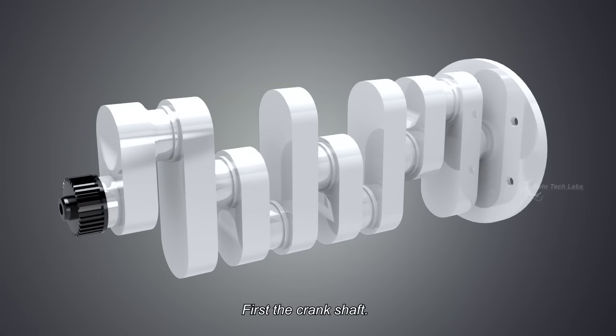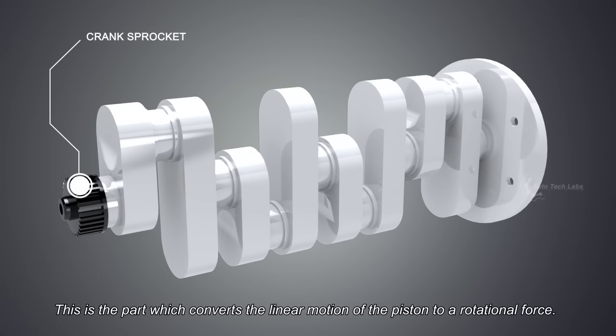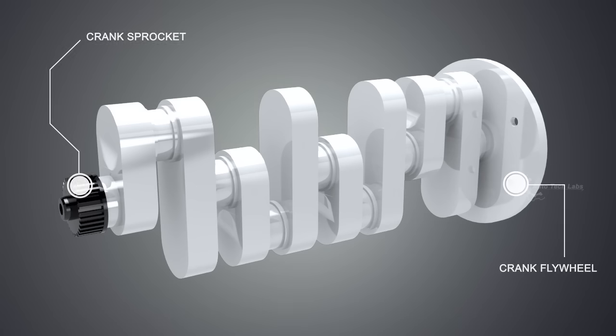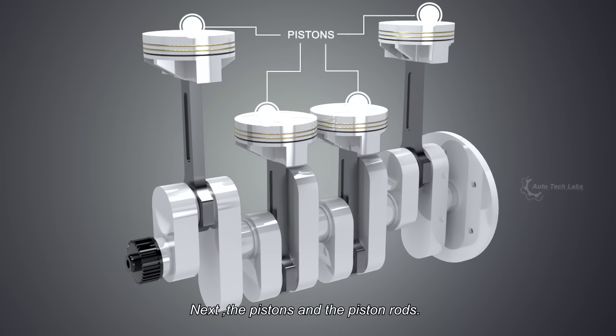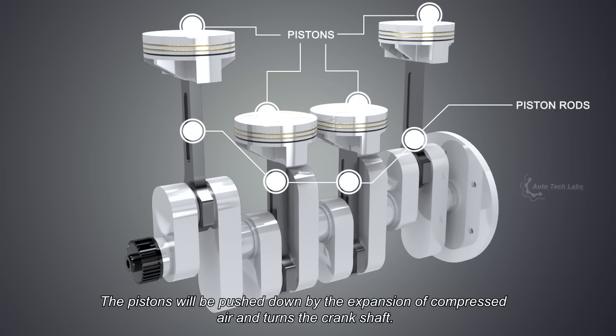First, the crankshaft. This is the part which converts the linear motion of the piston to a rotational force. Next, the pistons and the piston rods. The pistons will be pushed down by the expansion of compressed air and turns the crankshaft.